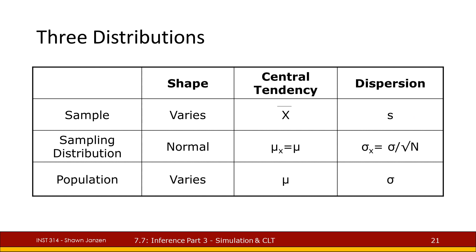Let's compare and contrast three distributions. The sample distribution is what we collect from data — its shape varies based on what we're measuring, with central tendency x-bar and dispersion s. The sampling distribution, according to the CLT, is always normal in shape (assuming CLT conditions are met), with central tendency mu-sub-x equal to mu, and dispersion sigma-sub-x equal to sigma divided by the square root of n. The population distribution has a shape that varies based on the variable as it naturally occurs, represented by mu and dispersed by sigma.